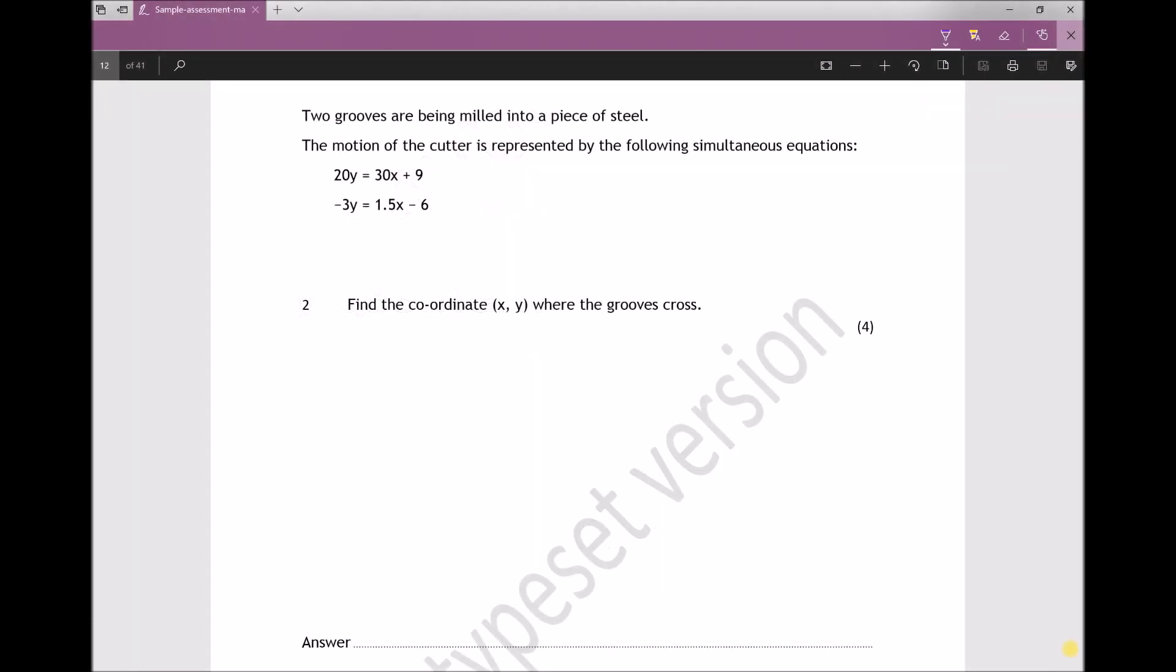Question 2 reads: Two grooves are being milled into a piece of steel. The motion of the cutter is represented by the following simultaneous equations. Equation 1 states that 20y equals 30x plus 9, and equation 2 states that minus 3y equals 1.5x minus 6. The question wants us to find the coordinate, or the x and y coordinates, where the grooves cross.